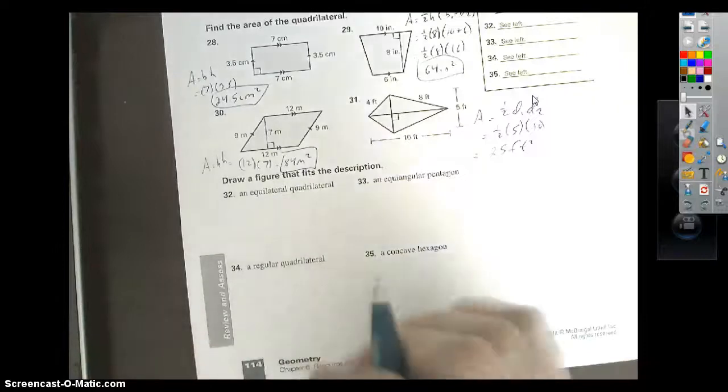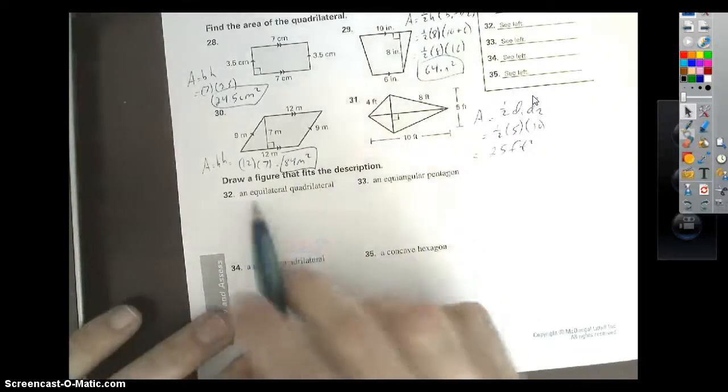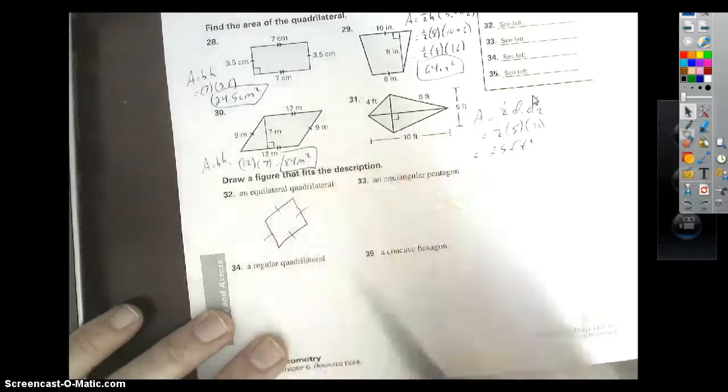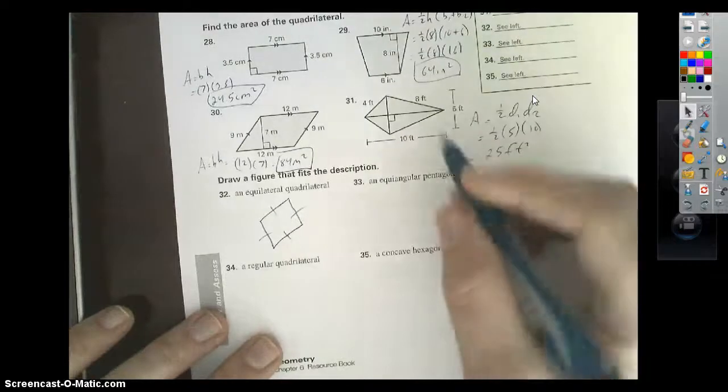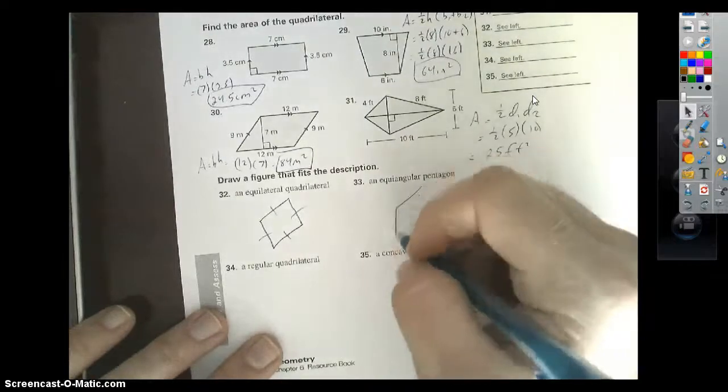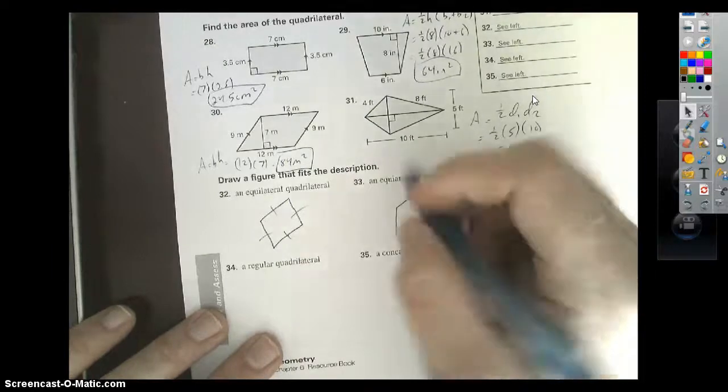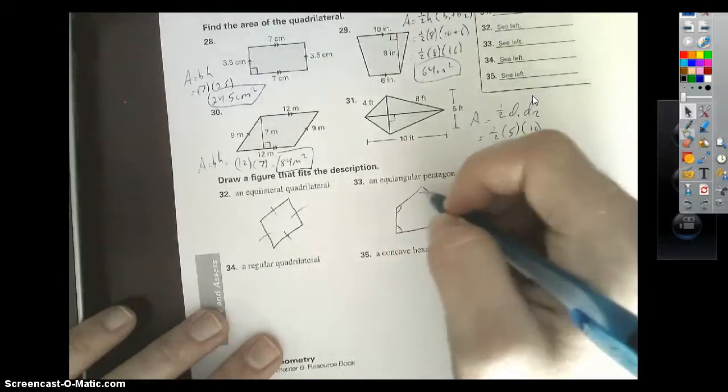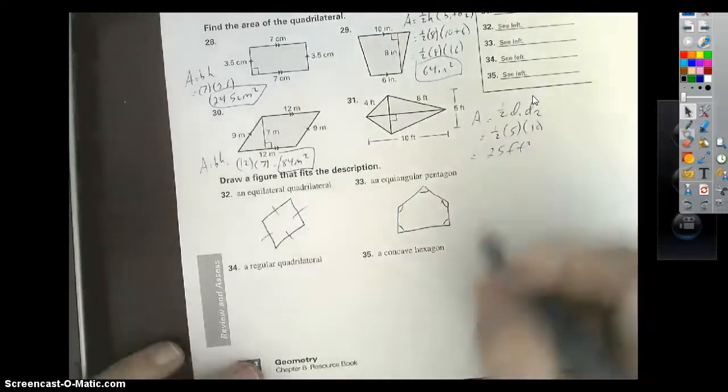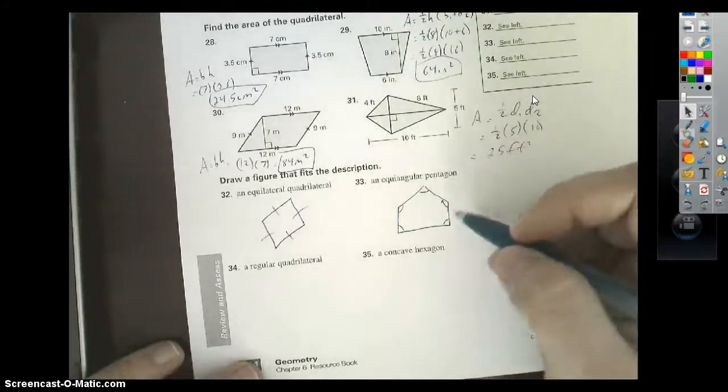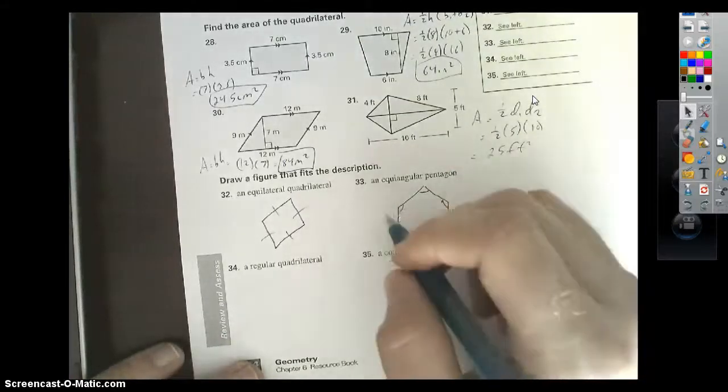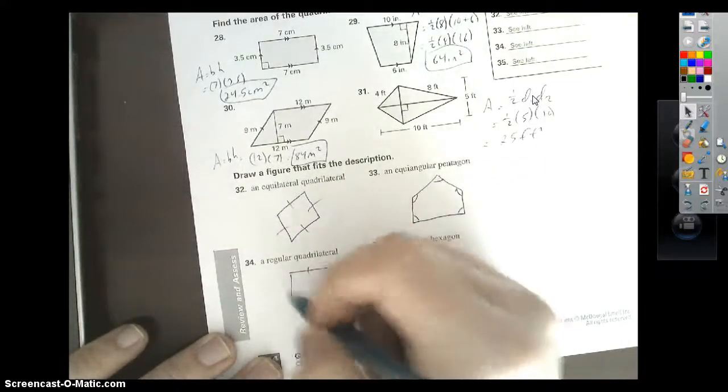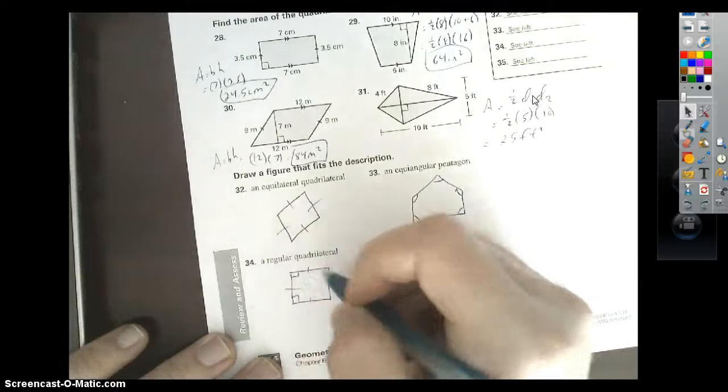All right. As far as the drawing of figures go, just quickly, we'll take a look at this. Equilateral quadrilateral, all four sides the same. I'm never going to judge you on your artistic ability, but just four sides the same. Equal angular pentagon. Just draw a pentagon the best you can. I know this one's not equal angular, but what I could do here to show this is put one dash on each angle. Again, my picture's definitely off, because these are 90 degrees, a little bit higher, but as long as you're noting it right, you're okay. A regular quadrilateral. The only one we got there is all four sides the same, all four angles the same, square.